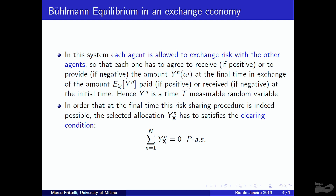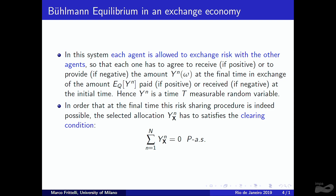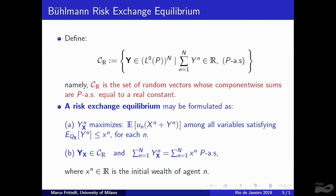For the clearing mechanism to work, the risk exchange among agents must satisfy a clearing condition: even though each component Yₙ is a random variable, their sum must equal a given constant. We define the set Cᵣ as the set of random vectors whose components are random variables but whose sum is a given constant.